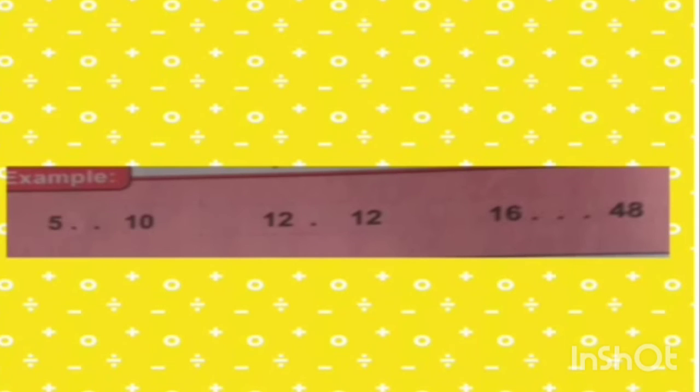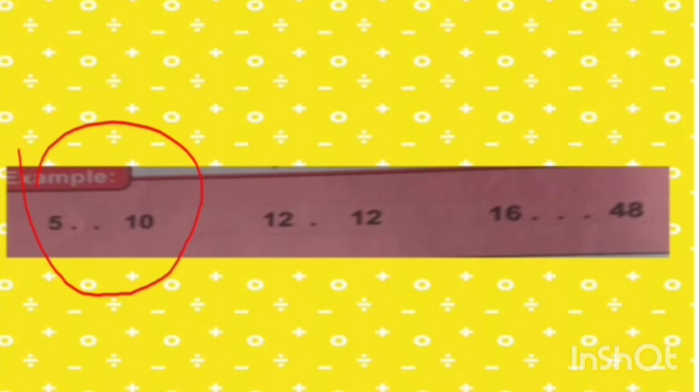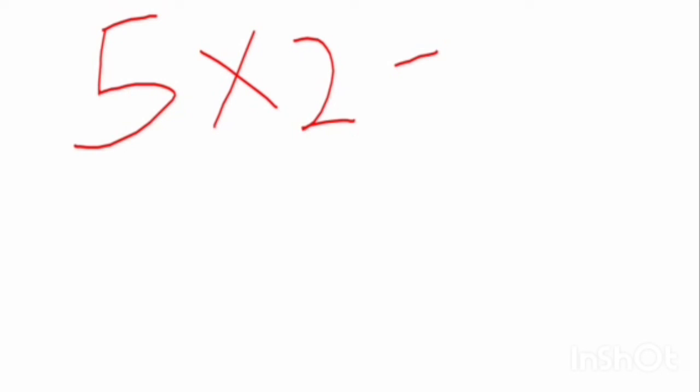From this point, let's now move on to example 3. Under example 3, let's look at the first sample. In this sample, we are working with dots. If you come across 2 dots with a number, you multiply that number by 2. If it is 3 dots, you multiply the given number by 3. If a number is attached to 4 dots, you multiply that number by 4 to get the second number. In this sample, we have 5, 2 dots, 10. If you are looking for 10, you will multiply 5 by 2, and that will give you 10.